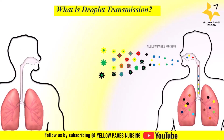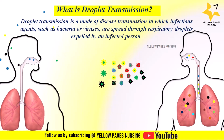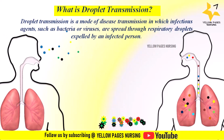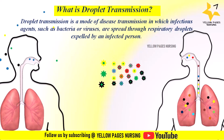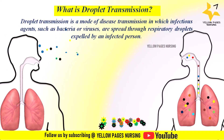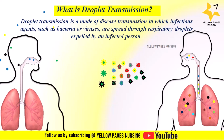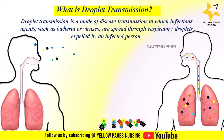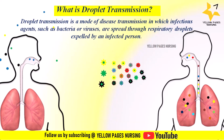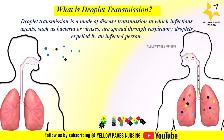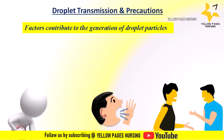Droplet transmission is a mode of disease transmission in which infectious agents such as bacteria or viruses are spread through respiratory droplets expelled by an infected person when he or she coughs or sneezes. These droplets can contain pathogens if the person is infected with a respiratory illness. If a person inhales or comes into direct contact with the respiratory droplet containing pathogens, the infectious agent can enter their respiratory tract.